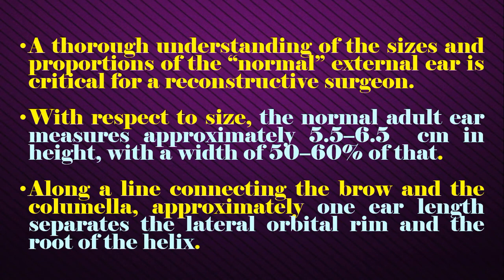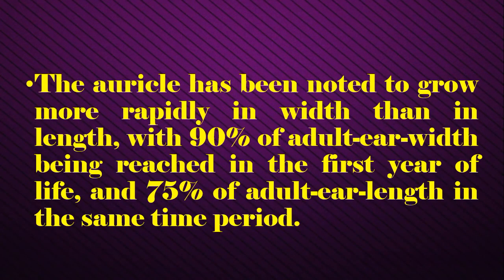A thorough understanding of the sizes and proportions of the normal external ear is critical for auricular reconstructive surgeons. The normal ear measures about 5.5 to 6.5 centimeters in height, with a width of about 50 to 60% of that. Along a line connecting the brow and the columella, approximately one ear length separates the lateral orbital rim from the root of the helix. The auricle has been noted to grow more rapidly in width than in length, with 90% of adult ear width being reached in the first year of life and 75% of adult ear length in the same time period.